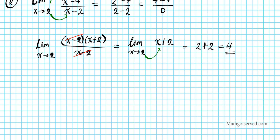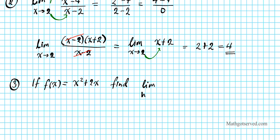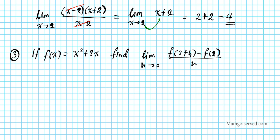Now let's go ahead and try example number 3. If f of x is equal to x squared plus 2x, find the limit as h approaches 0 of f of 2 plus h minus f of 2, divided by h. We can clearly see that if I plug in 0 into the denominator I'm going to be dividing by 0 and it's going to be undefined. So what I'll do is evaluate the top as much as I can to see if I can extract a factor of h to cancel out this denominator.